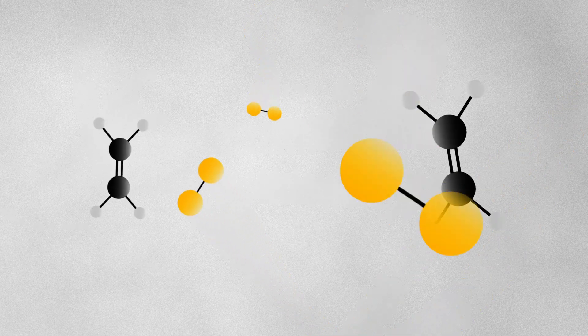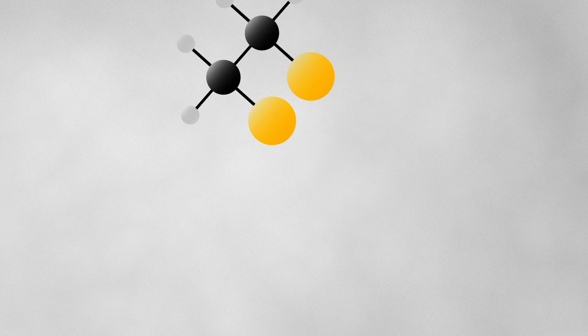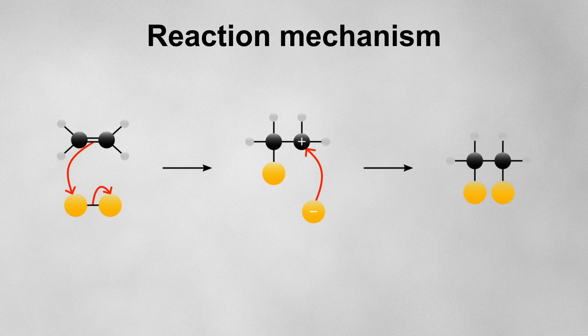It's important for organic chemists to be able to visualize the different ways that molecules react with each other. This allows them to understand and predict how reactions will happen. This visual representation of a reaction is called a reaction mechanism.